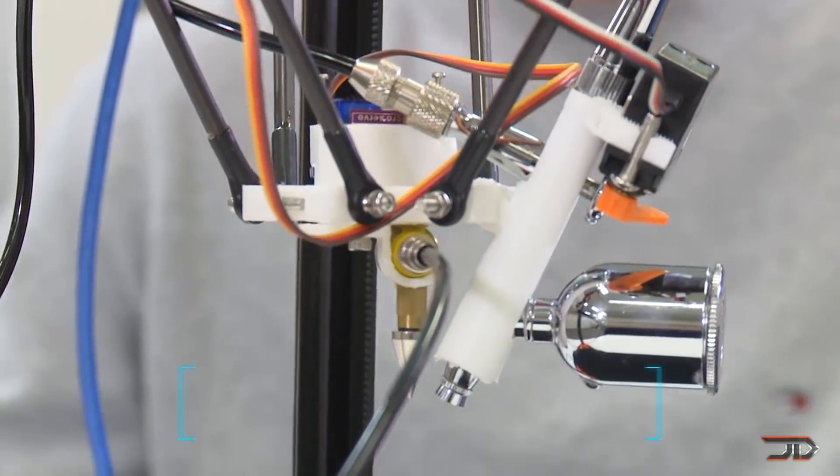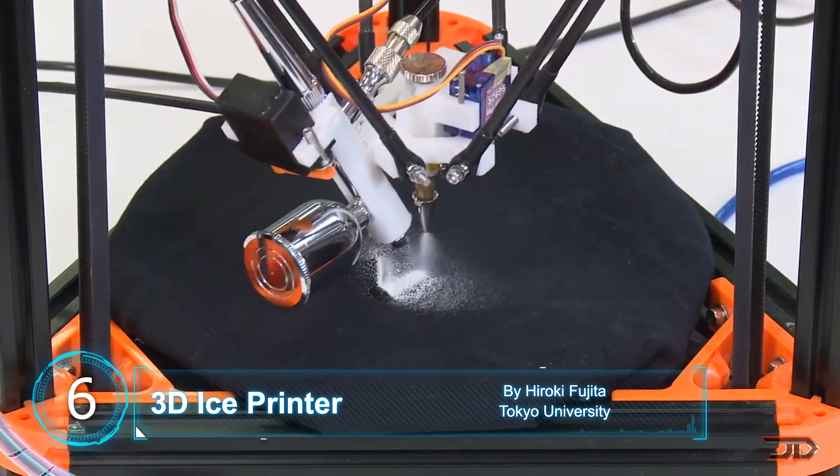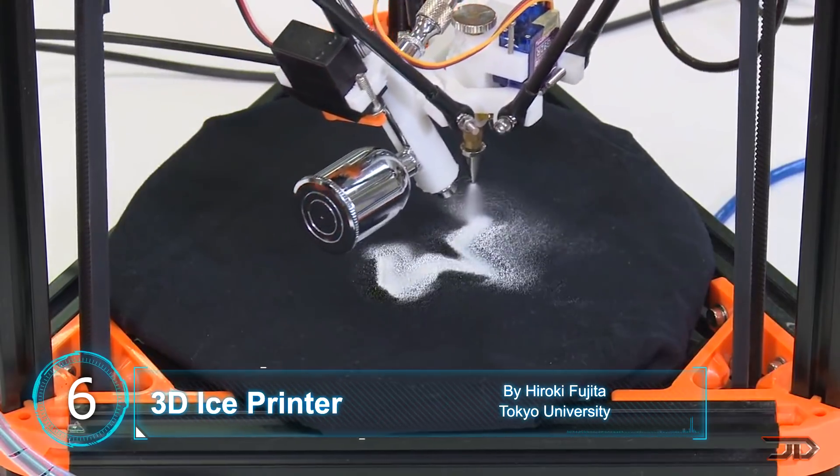At number 6, the Ice Maker. Now, who would like some custom ice cubes in their drink? Well, one student can actually make whatever shape you want with his modified 3D printer.